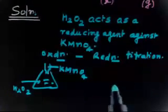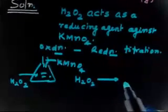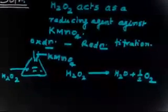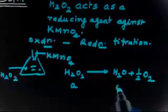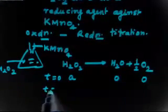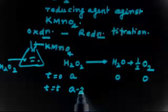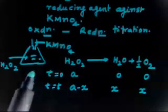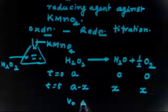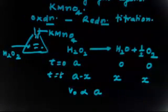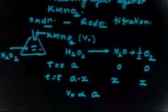We can write the reaction: H2O2 dissociates to give H2O plus half O2. Initially at T=0, concentration is A, with 0 products. After time T, H2O2 concentration is A−X, with X and X/2 for products. At initial time, the volume of KMnO4 used is V0, so V0 is proportional to A.